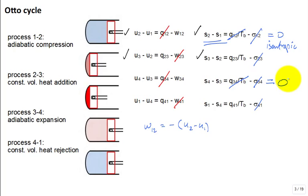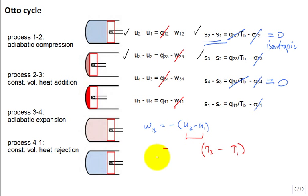At this point, if you wanted to calculate the change in internal energy, I would need to know the temperature at state two and the temperature at state one. If I knew those temperatures, I could get the change in U by multiplying delta T by a property known as C_V — the specific heat at constant volume.